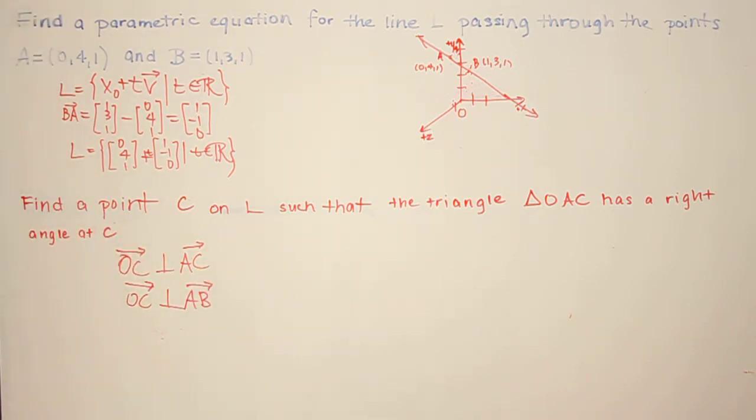Now, from the first part, we already calculated AB, or BA which are the same, to be (1, -1, 0).